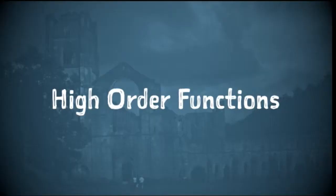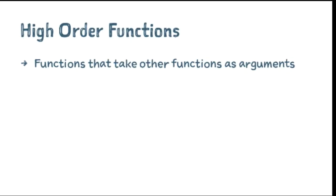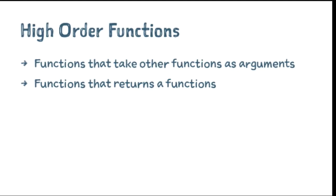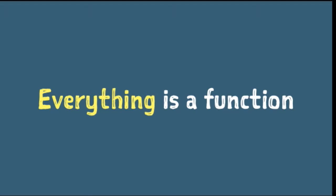A functional program is made of higher-order functions. A higher-order function is a function that can take another function as an argument, or it can be a function that returns a function. These are really great because they allow us to use functions which are highly reusable and customizable. In Swift, everything is a function — by this I mean a function, a closure, or an operator is a function in Swift.